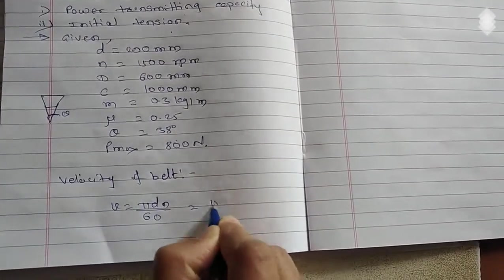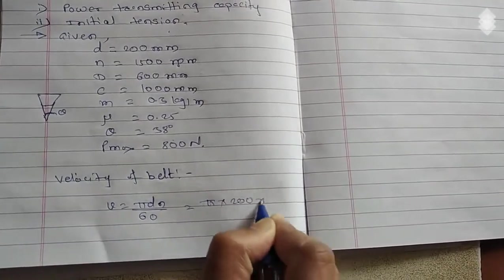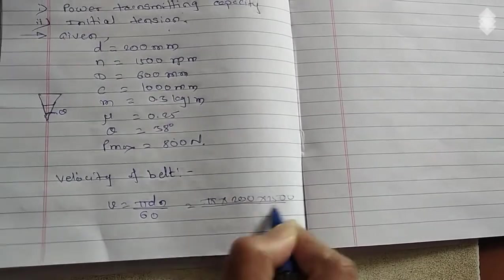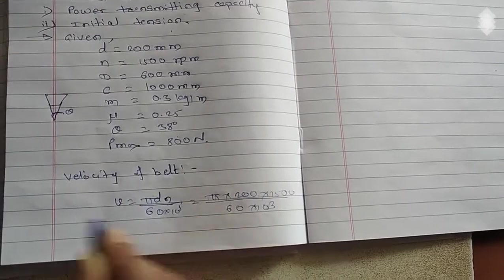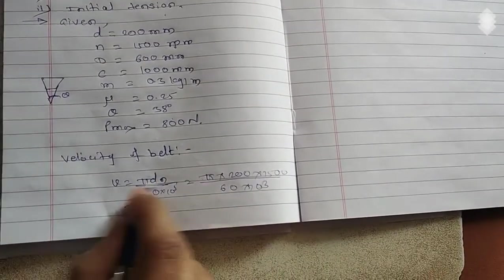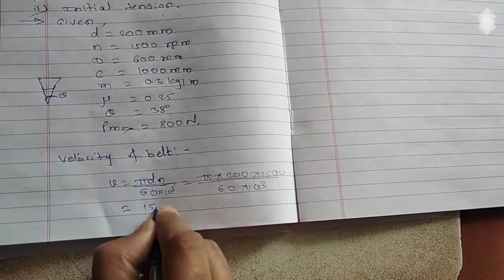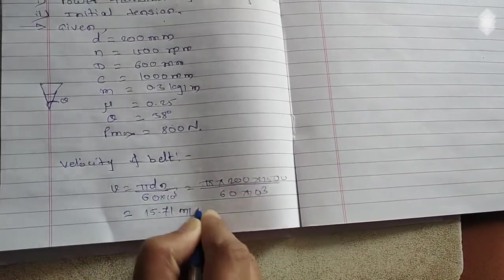V equals pi d n upon 60. The d is given, n is given, d is 200, n is 1500, 60 times 10 raised to 3, because we want velocity in meter per second. So we'll get the velocity by calculation, 15.71 meter per second.